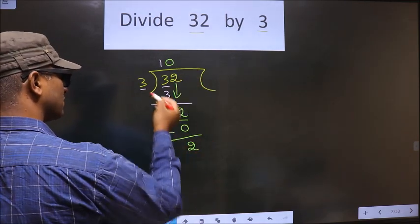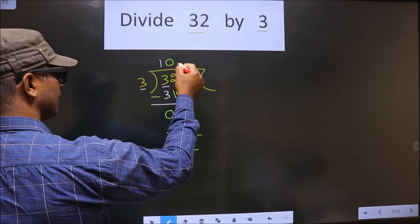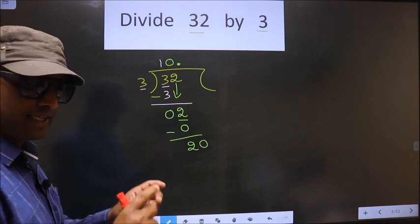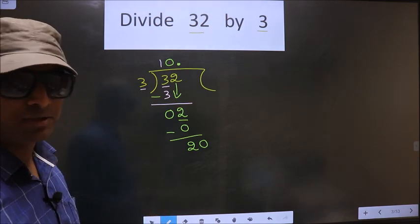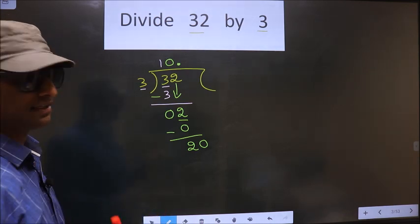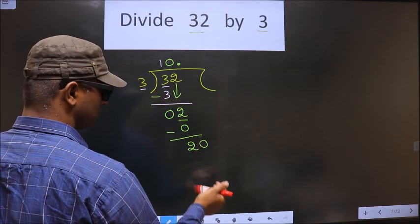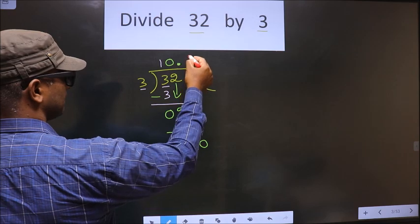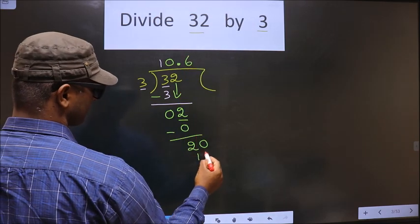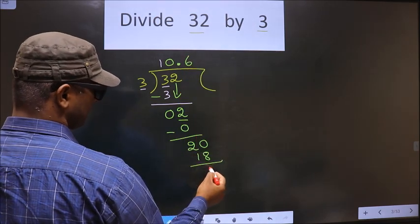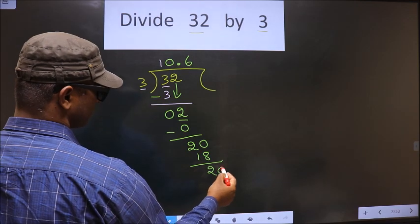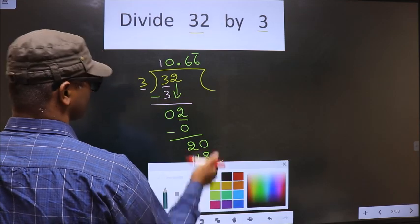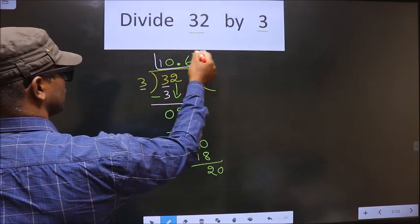So now 2 is smaller than 3, so now you take the decimal and 0. Understood where many go wrong? You should not do that mistake. Now as usual, here we have 20. A number close to 20 in the 3 table is 3, 6, 18. 20 minus 18 is 2. So 6 goes on. So this is our quotient.